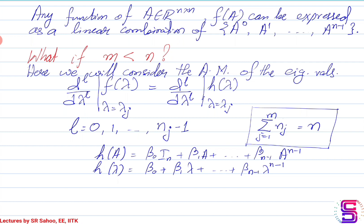In general, if m equals n, then l is 0 for every eigenvalue. If m is less than n, then l varies from 0 to n_j minus 1, where n_j is the algebraic multiplicity. When m equals n, n_j equals 1. So you essentially generate a set of n equations from the eigenvalues, solve those n equations for coefficients beta_0 to beta_{n-1}, substitute into the polynomial representation, and that gives you F(A).